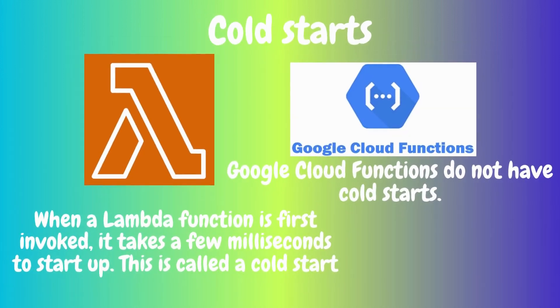Cold starts: when a Lambda function is first invoked, it takes a few milliseconds to start up — this is called a cold start. A cold start occurs when the Lambda function is not already running when first invoked, so Lambda needs to start up the function's container before executing the code. This can add noticeable latency for latency-sensitive applications. Google Cloud Functions, on the other hand, always keeps functions running in the background, so there is no cold start latency.